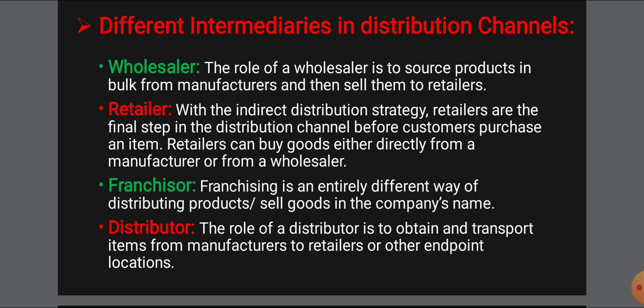Franchisors sell the product under the name of a particular brand — for example, a McDonald's or KFC franchisee sells products under that particular brand or franchise name. Distributors take the product from the manufacturer and give it directly to the retailer or consumer, and they can also make some modifications to the product. In this way, wholesalers, retailers, franchisors, and distributors act as intermediaries in the distribution channels.